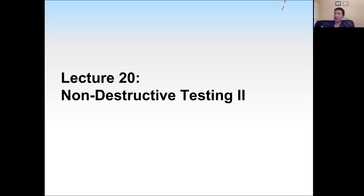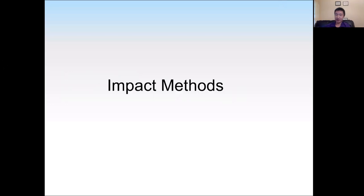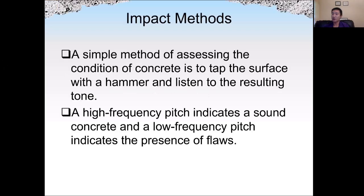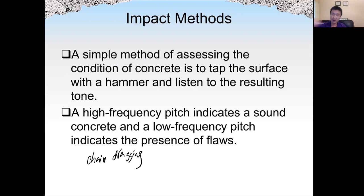Today we talk about lecture number 20, which is the second lecture on NDT. Last time we talked about ultrasound, and today we start with the impact method. The impact method uses a mechanical way to test materials such as concrete and steel. We use tapping such as a hammer, or we can drag a steel chain — called chain dragging — on the surface of the concrete and listen to the pitch or frequency of the sound.